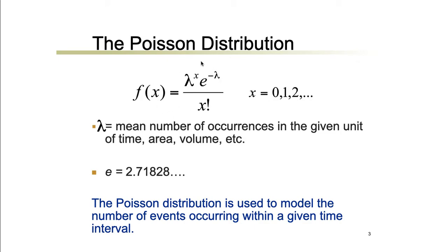Going back to our formula for a Poisson distribution, lambda represents the average or mean number of occurrences in the given unit of time, area, volume, or any other units of measurement. And e here is Euler's constant, which is equivalent to 2.71828. You may be able to locate e or Euler's number in your scientific calculator.